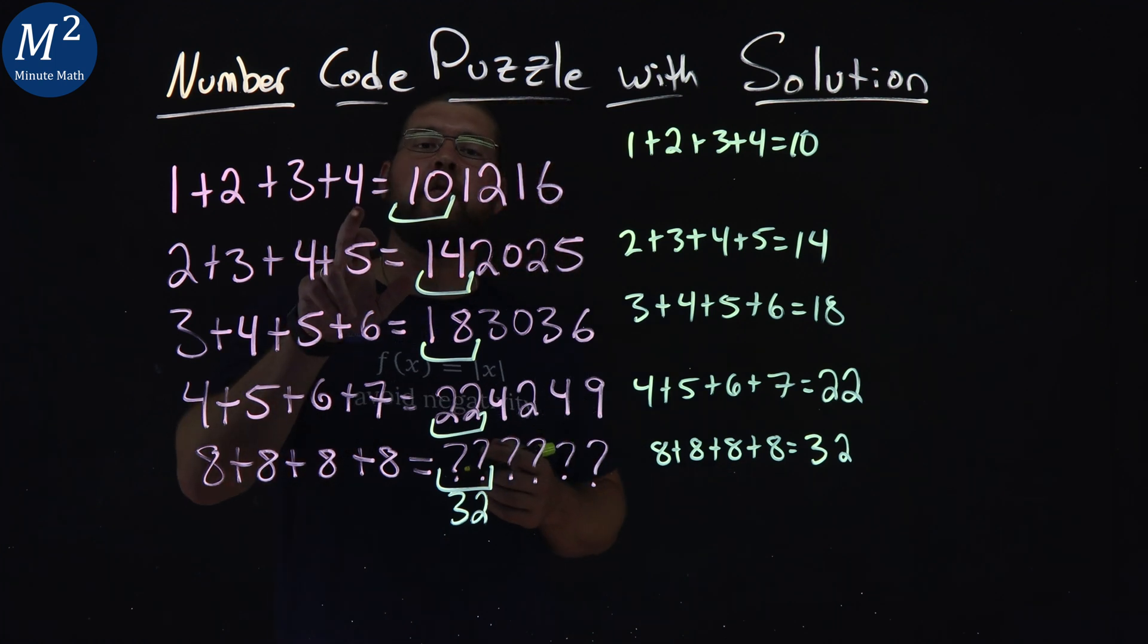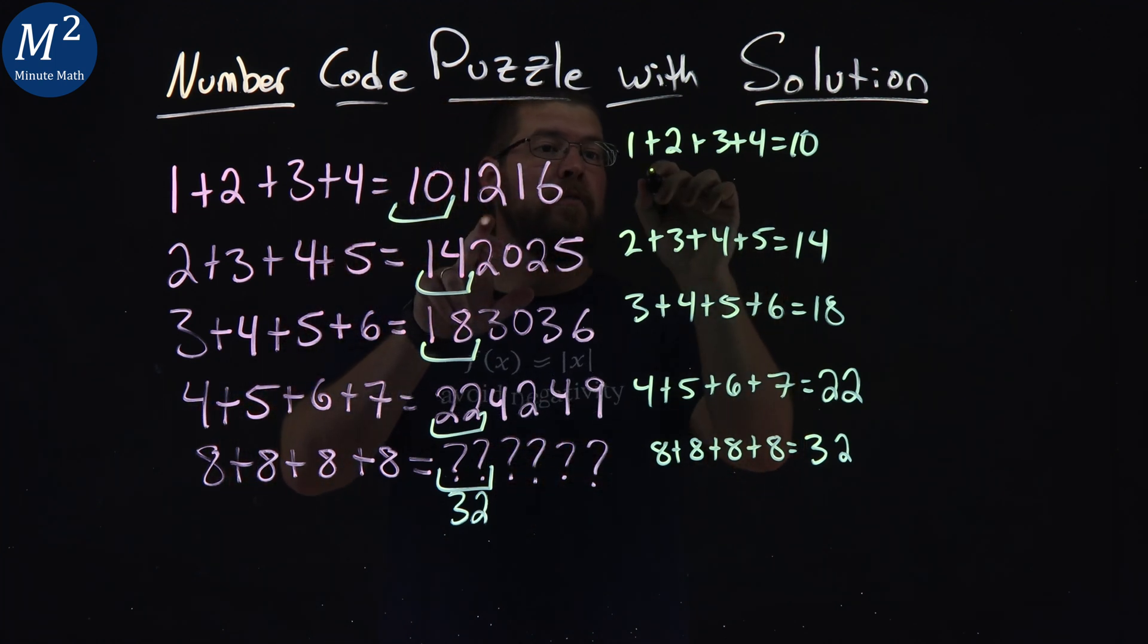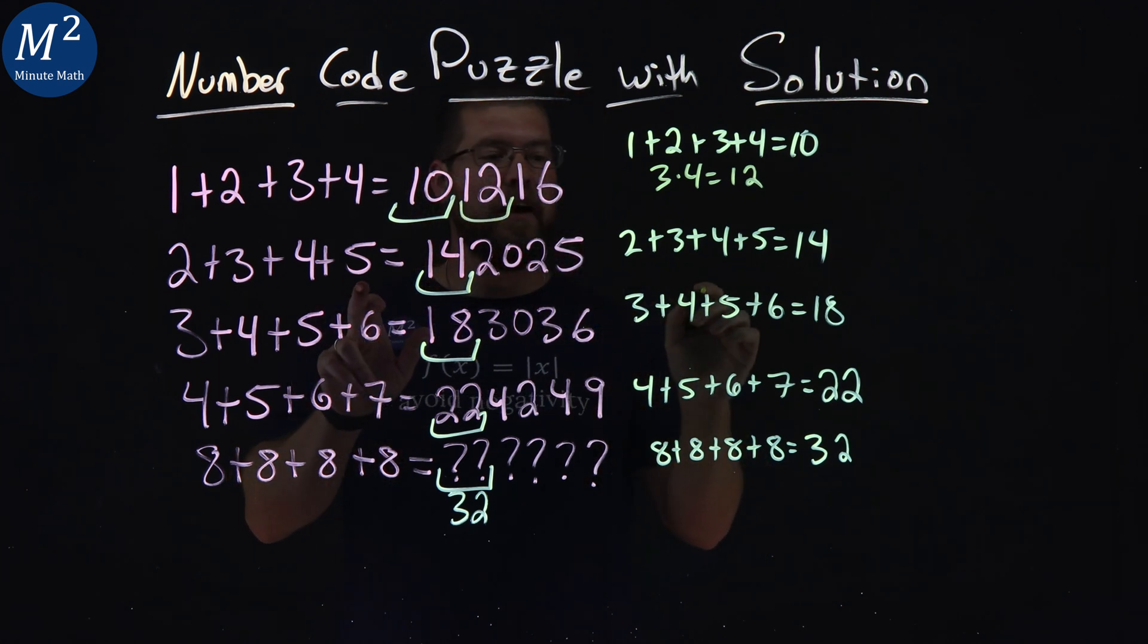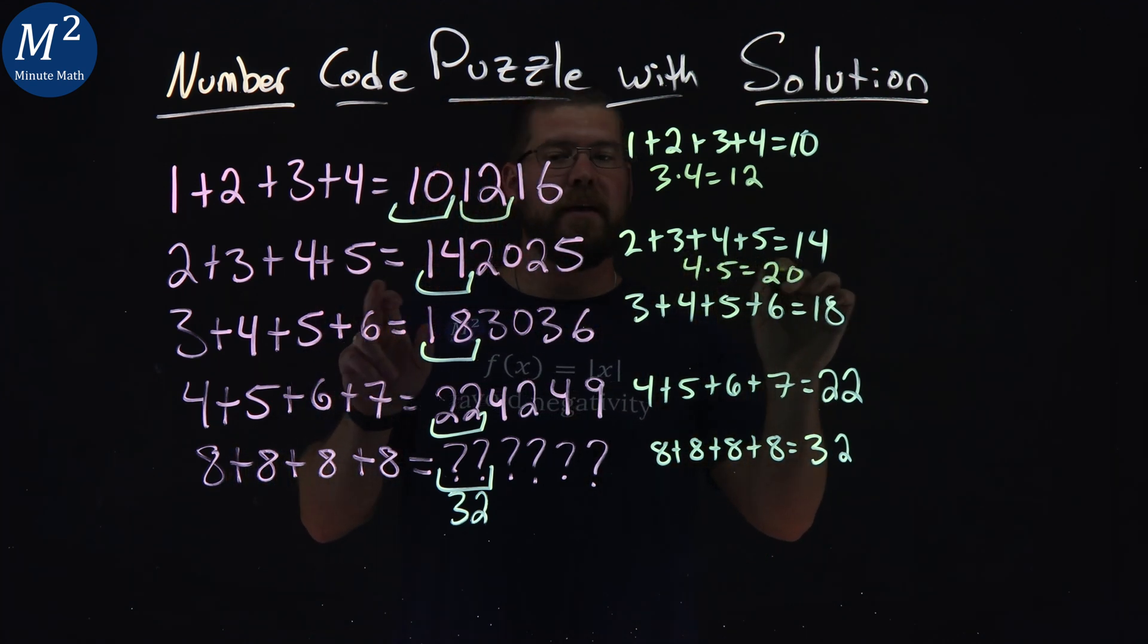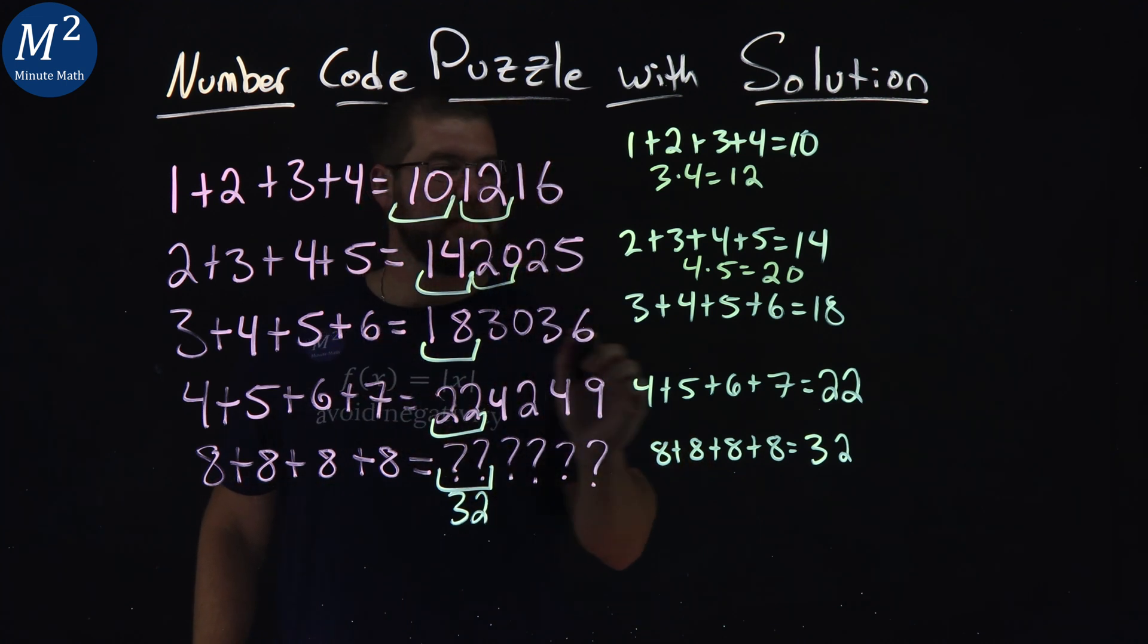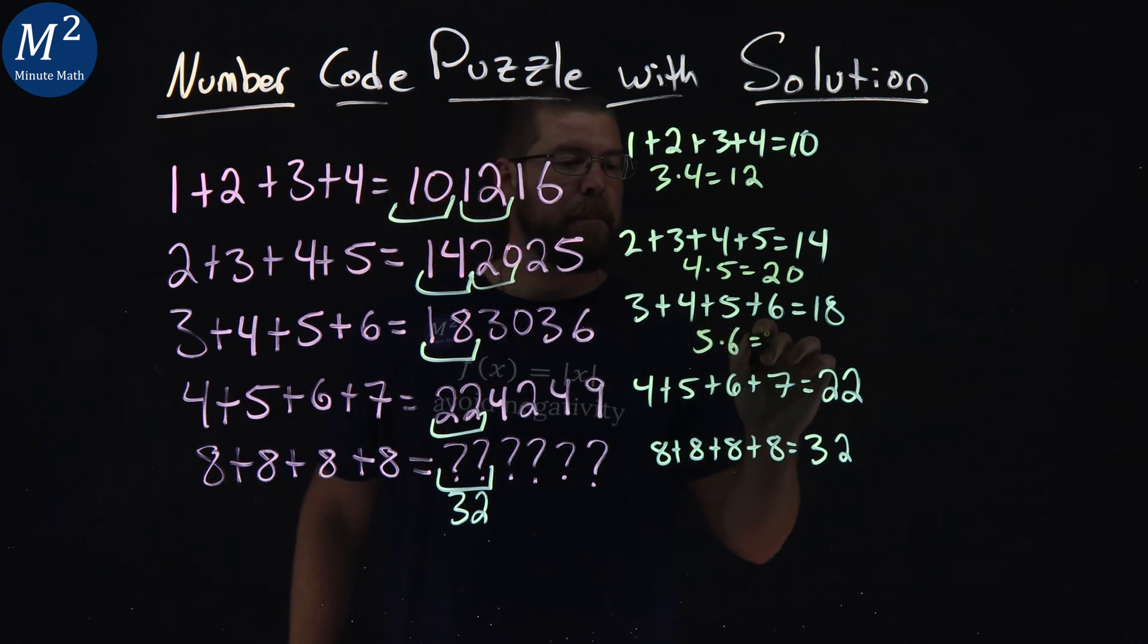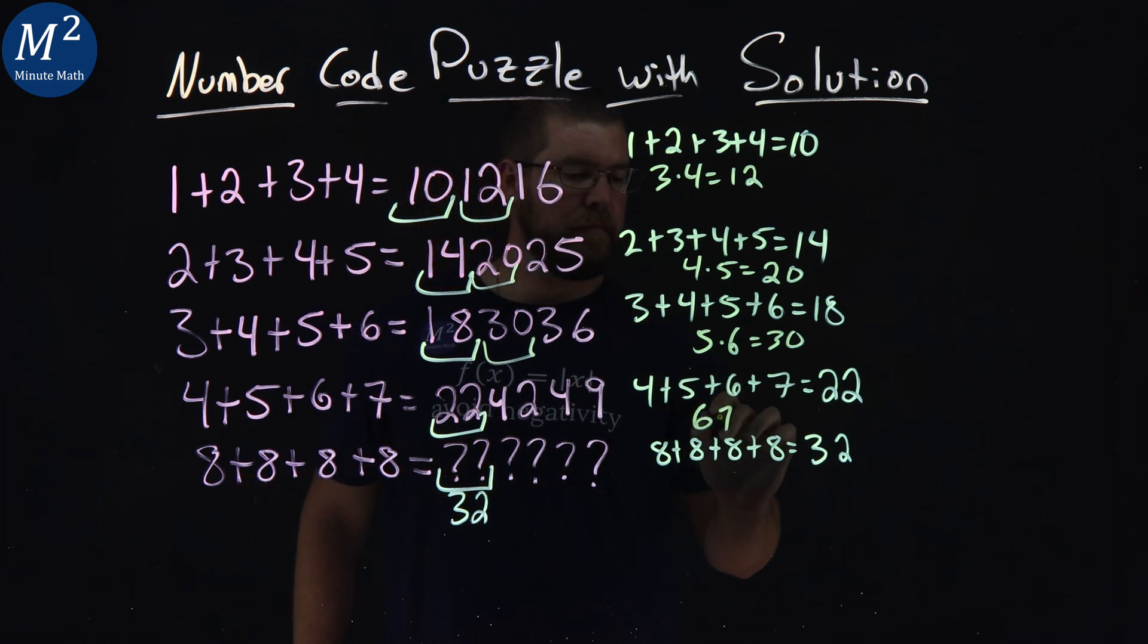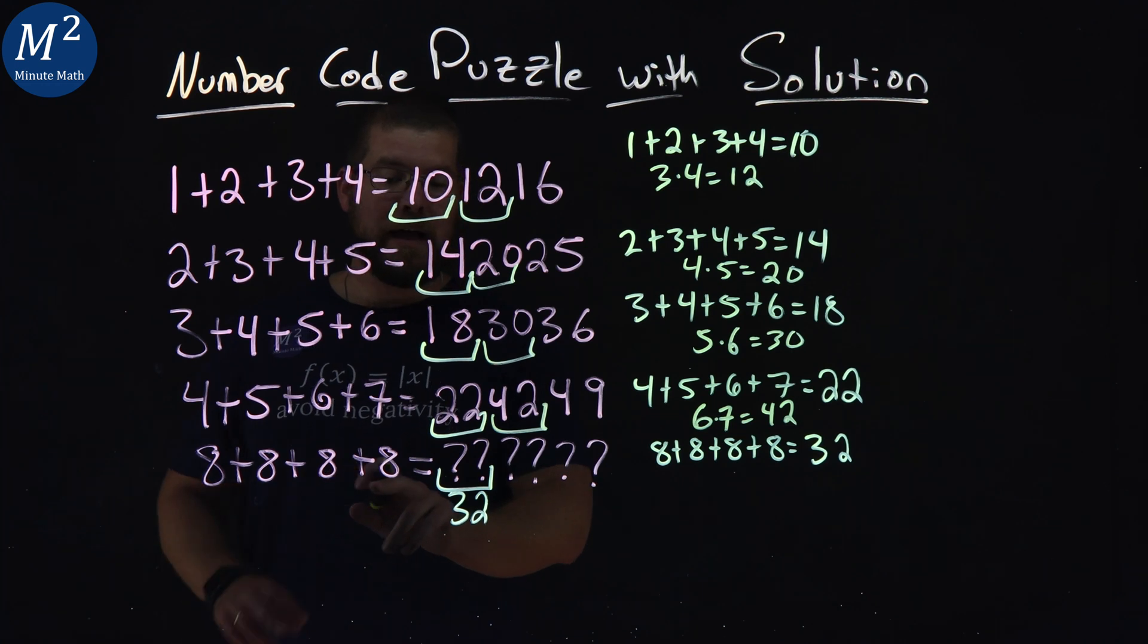So 3 and 4 multiplied is a 12. 3 times 4 gives me a 12. 4 times 5 equals a 20. 5 times 6 is 30. 6 times 7 is a 42.